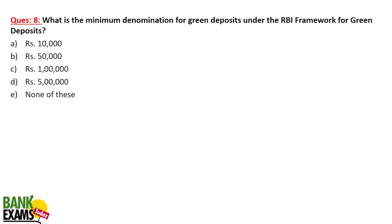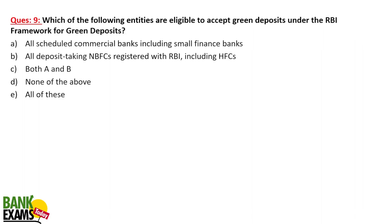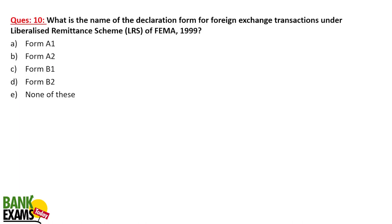The minimum denomination for green deposits under the RBI framework is 50,000 rupees, and further deposits can be accepted in multiples of 50,000. Which entities are eligible to accept green deposits? All scheduled commercial banks and deposit-taking NBFCs including HFCs can accept money for green deposits.